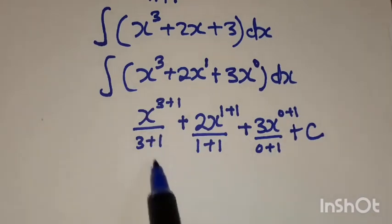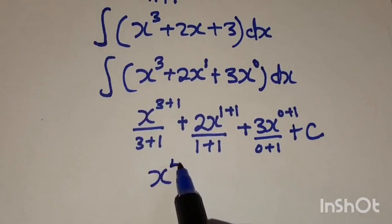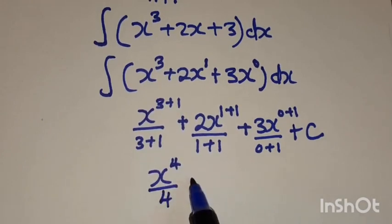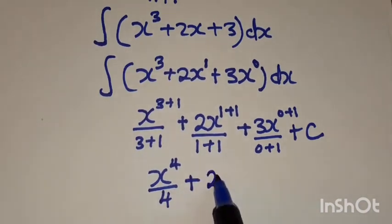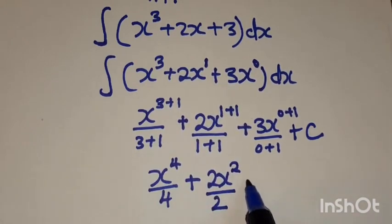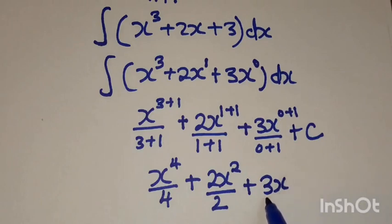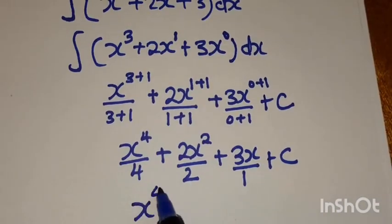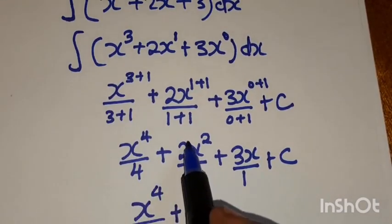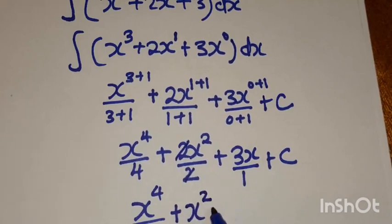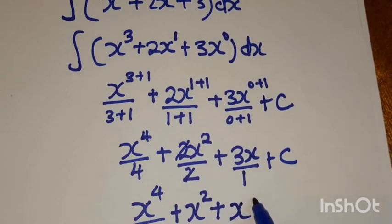Let's simplify. We are going to have x to the power 4, divided by 4, plus 2x to the power 2 over 2, plus 3x to the power 1 over 1, plus c. Simplifying further: x to the power 4 over 4, plus — 2 and 2 are dividing — which leaves x squared, plus 3 divided by 1 is 3, times x, which is just 3x, plus c.